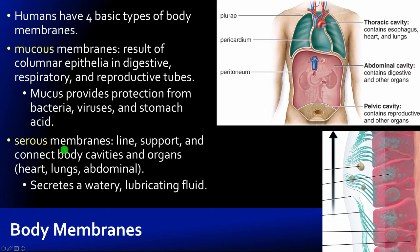Serous membranes relate directly to the ventral cavity — they line and support structures within our body cavities, connecting organs to the body cavities and acting as pathways for blood vessels. They are specifically associated with the heart, lungs, and abdominal organs, and they secrete a watery lubricating fluid to allow movement without damaging these thin membranes or the organs they're associated with. We have three names: pleura, pericardium, and peritoneum. In each case there are two layers: visceral, meaning on the organ surface, and parietal, meaning associated with the wall. For example, the heart sits within the parietal pericardium, and the very outer layer of the heart is called the visceral pericardium.